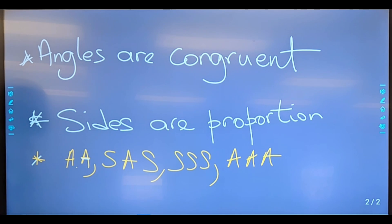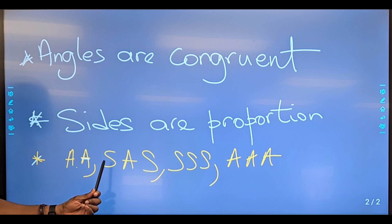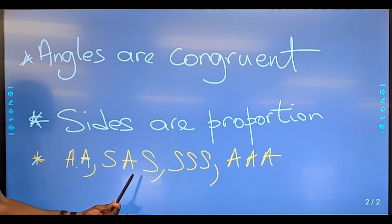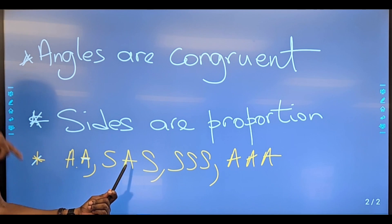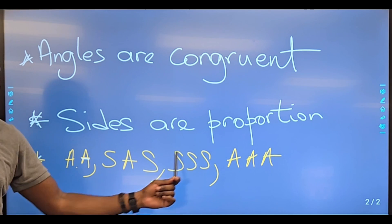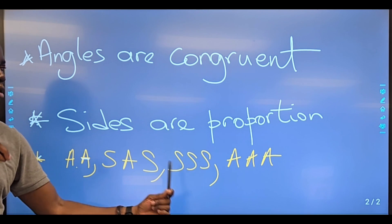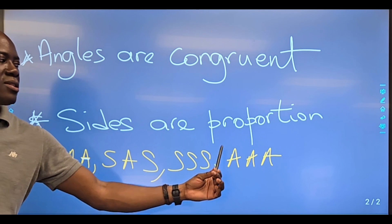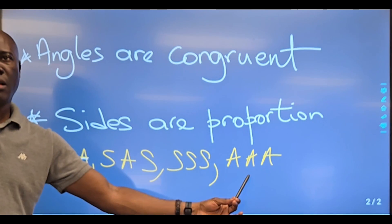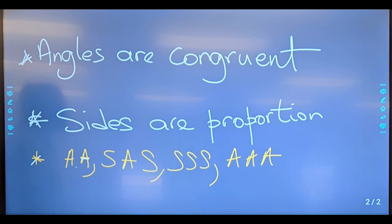The postulates we're going to focus on are as follows. If you can prove that two angles are congruent, we're good — that's the angle-angle postulate. If you can show two sides are proportional and a congruent angle, that's side-angle-side. Or if all three sides share the same ratio — corresponding sides, same ratio — that works too. These are the foundations for what we're going to be using.